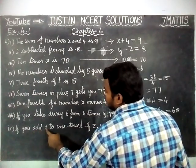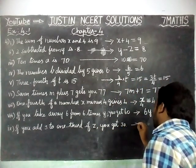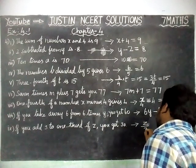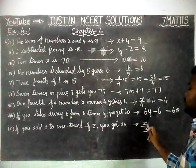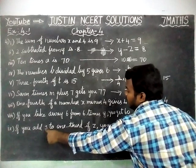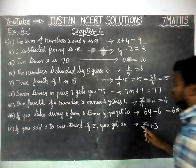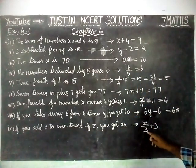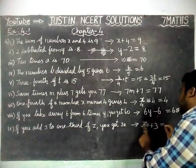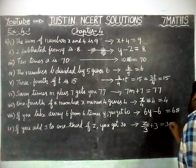Ninth question: If you add 3 to one third of Z, you get 30. One third of Z is written as Z by 3. Adding 3: Z by 3 plus 3 is equal to 30.